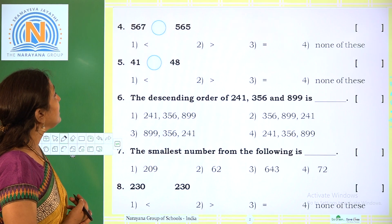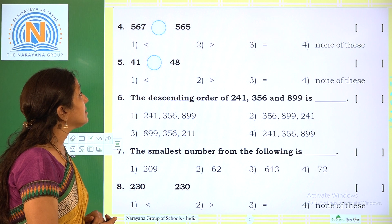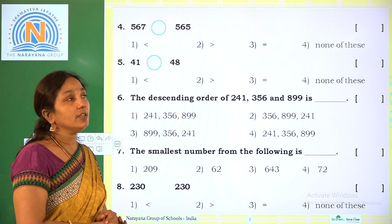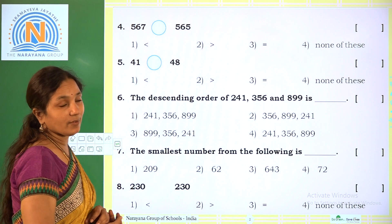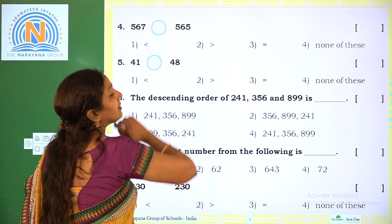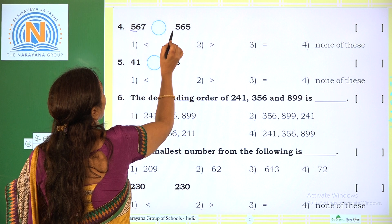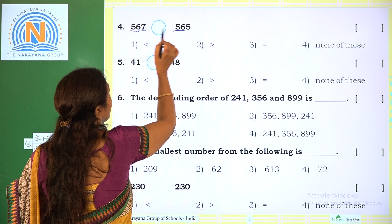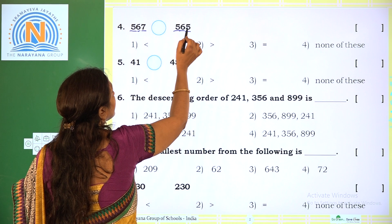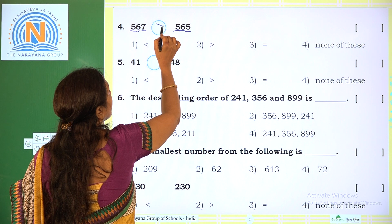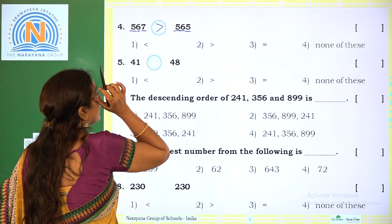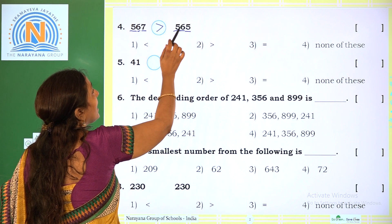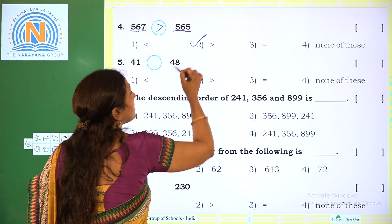Next: 567 compared to 565. The options are less than, greater than, equal to, and none of these. Both are 3-digit numbers. Comparing hundreds: 5 and 5. Comparing tens: 6 and 6. Comparing units: 7 and 5. So 565 is the smaller number. The closed side of the symbol faces the smaller number and the open side faces the greater one. So 567 is greater than 565. The required option is 2.